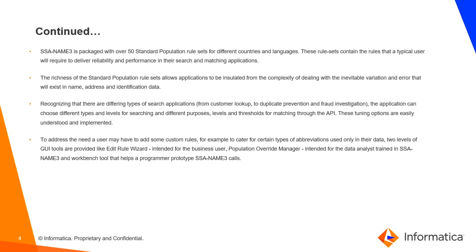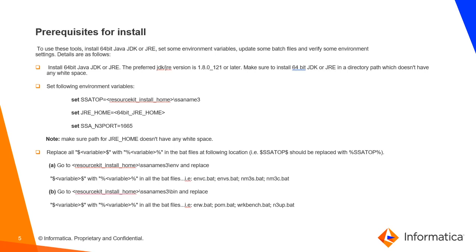A user may add custom rules — for example, to cater for certain types of abbreviations used only in their data. Two GUI tools are available: the Edit Rule Wizard (ERW), intended for business users to edit rules, avoid certain words, or override and replace words; and Population Override Manager (POM), which allows customizing purposes by editing population files. The Workbench tool helps a programmer prototype SSNM3 calls.